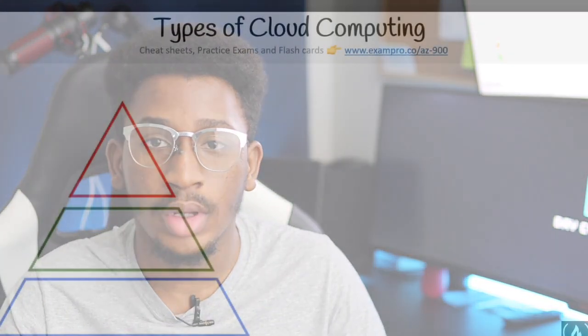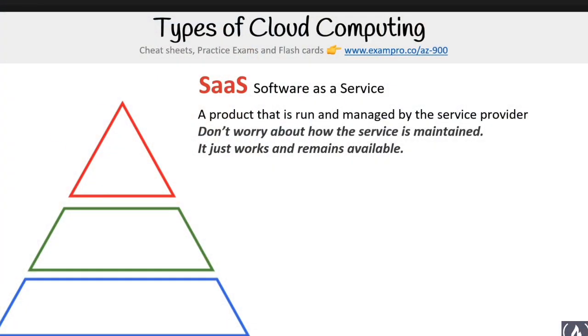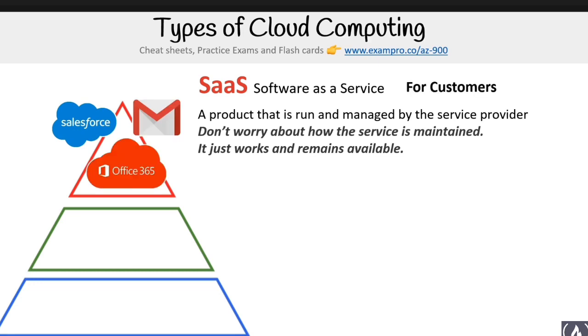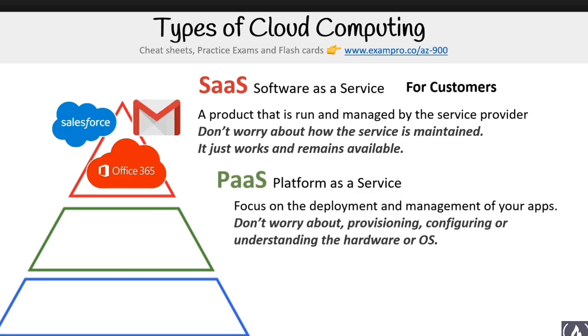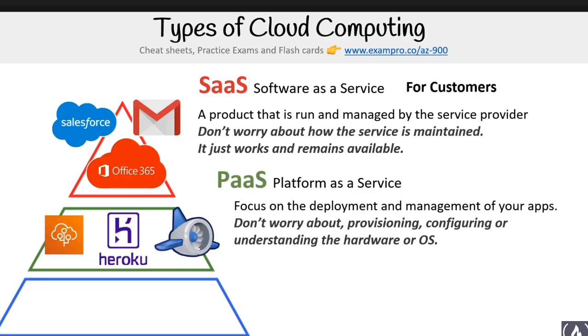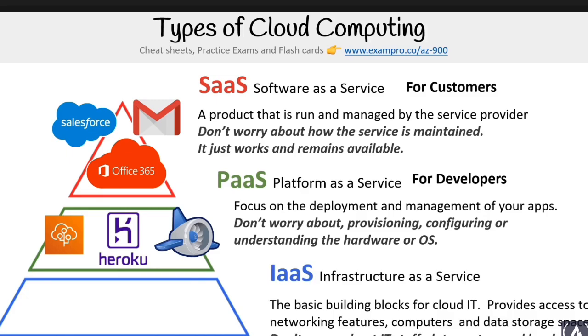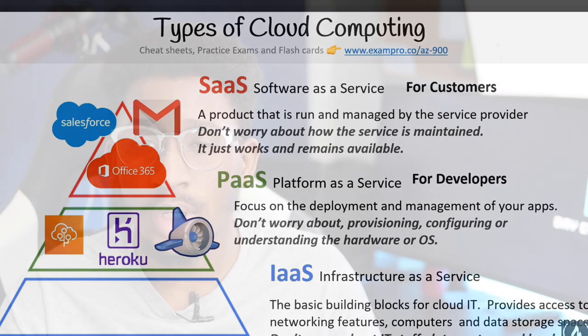The second resource I recommend is Code Academy's YouTube video. This is a three-hour-long video, or you can call it a course, and it covers everything you need for this exam. It's a high-level overview of everything required for the AZ-900, but what I like about it is it goes straight to the point, defines each concept, and relates them to how you would probably see them in the exam.